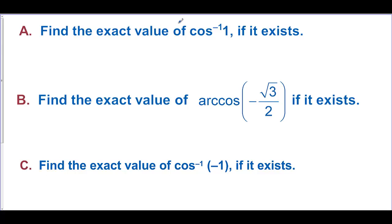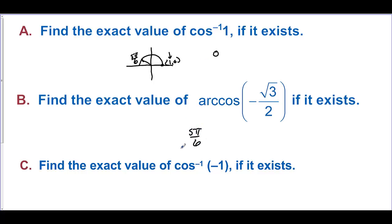Find the exact value of inverse cosine of 1, if it exists. From 0 to pi, the point where cosine equals 1 is at the angle 0, so inverse cosine of 1 equals 0 radians. Next, find inverse cosine of negative square root of 3 over 2. The x-coordinate negative square root of 3 over 2 is in quadrant 2, and that is 5 pi over 6. Finally, inverse cosine of negative 1: cosine equals negative 1 at the point negative 1, 0, so the answer is pi.